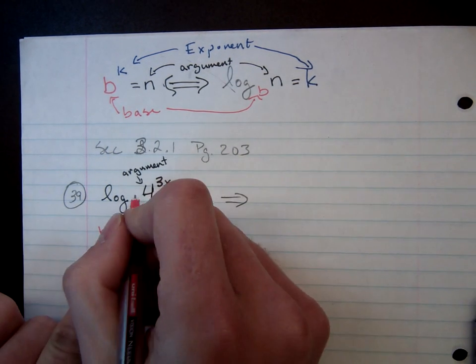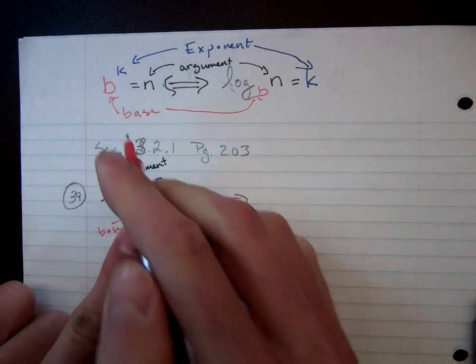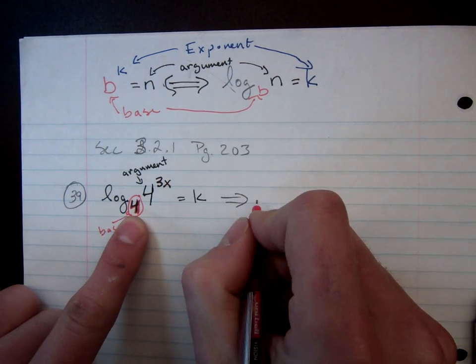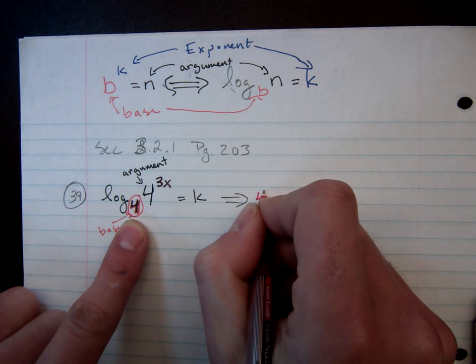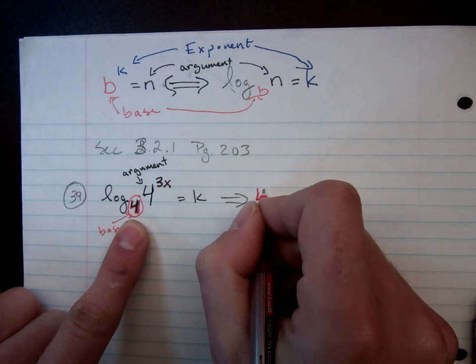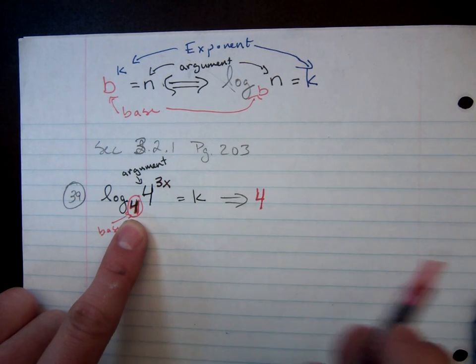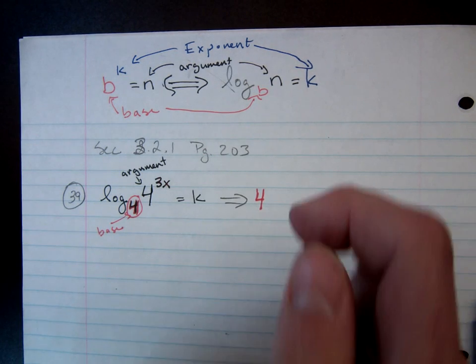Now, identify my base. Well, my base, and you start with the base, is 4. Now, it's 4 to the k power. I don't know what k is in this case.